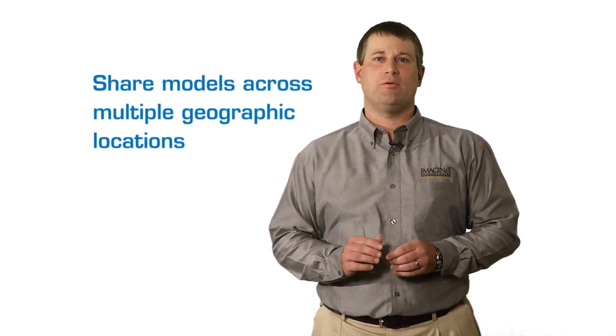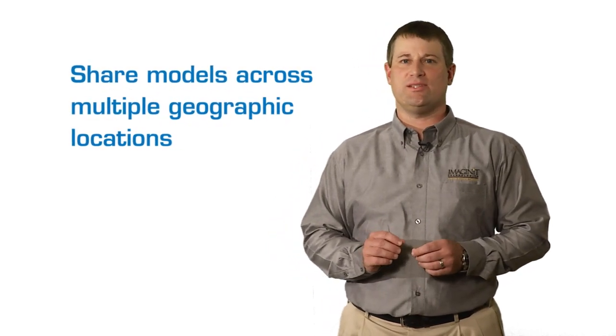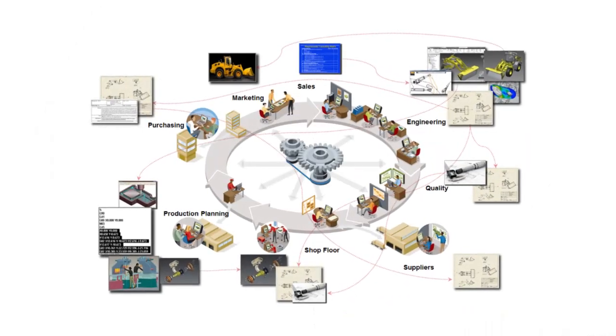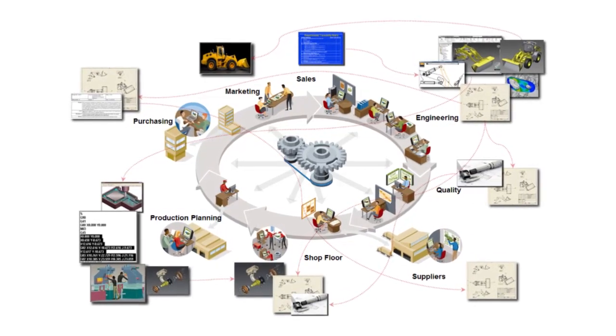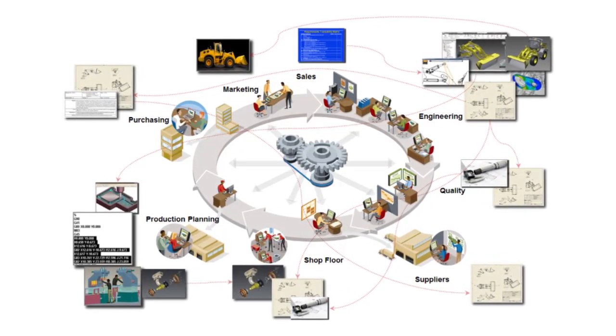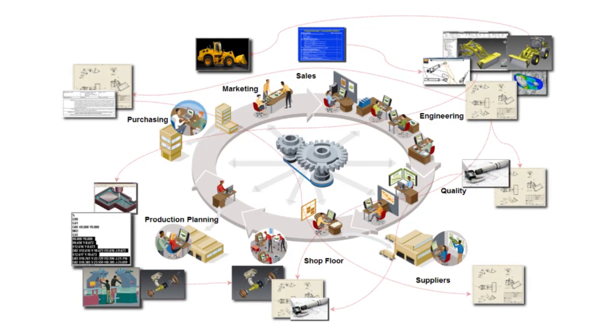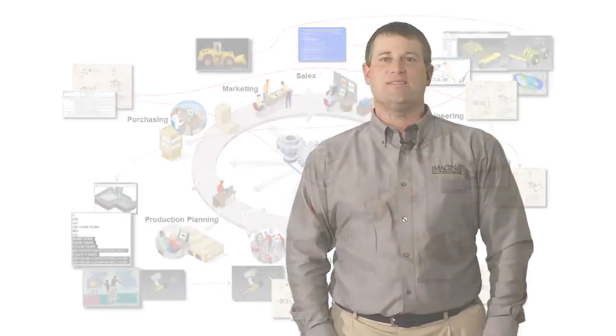One civil firm we worked with had offices in multiple locations. Some were very busy, while others had almost no work at all. We were able to help them leverage model sharing across multiple geographic locations so they could harness the talents of those in less busy locations. This helped them better manage the load of those who were juggling multiple projects, resulting in ensuring all client deadlines were met.